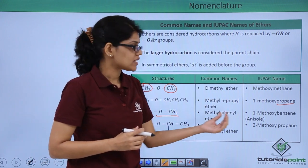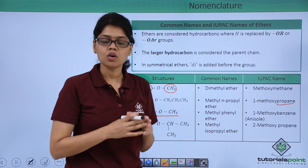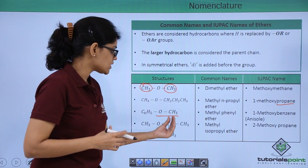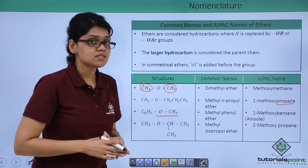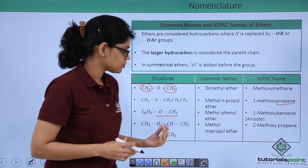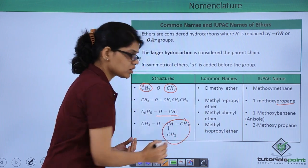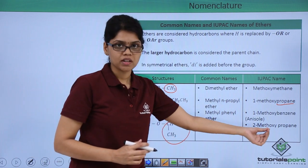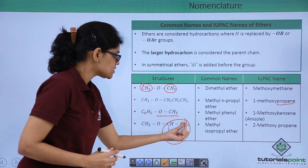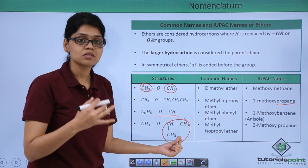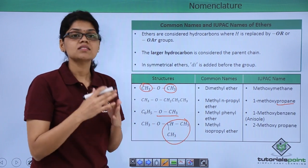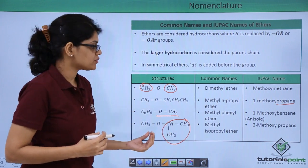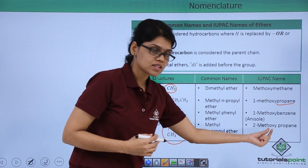Note that 1-methoxybenzene is also called anisole. For CH3-O-CH(CH3)2, this is methyl isopropyl ether and the IUPAC name is 2-methoxypropane, because propane is the larger hydrocarbon and becomes the parent chain, with the methoxy substitution at the second carbon, giving 2-methoxypropane.